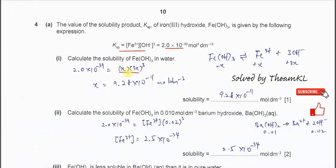The concentration of iron 3 is x and the concentration of hydroxide is 3x. Remember here it is 3x cubed. After rearranging to get x, the value is 9.28 times 10 to the power negative 11 mol per dm³, and this represents the solubility of iron 3 hydroxide.